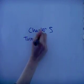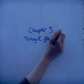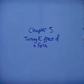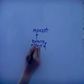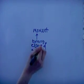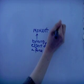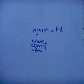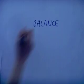Chapter five: the turning effect of a force. A moment is a turning effect of a force on a body. To calculate a moment, you must multiply the force by the perpendicular distance from the force to the pivot.